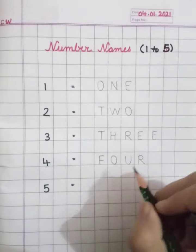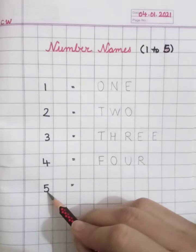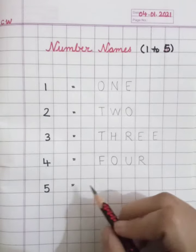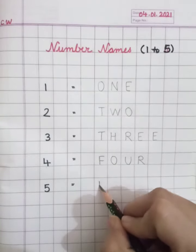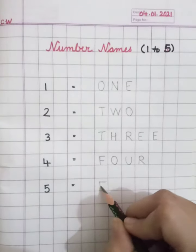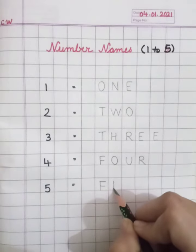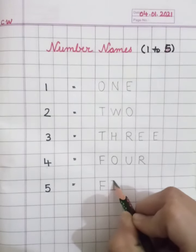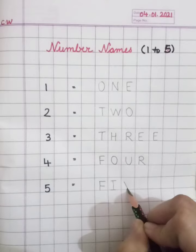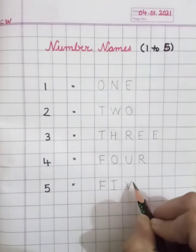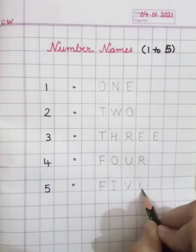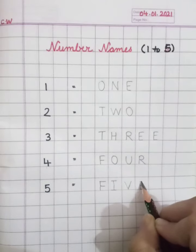Now, look here. Number five. We have to write F, I, V, E, five.